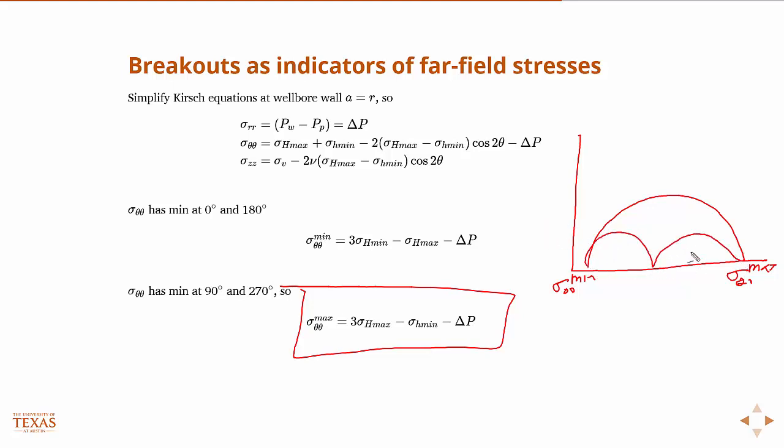So really, this difference is what's going to—if we have an envelope that looks like that—it's the difference in the hoop stress that's going to determine if we fail or not. So our breakouts are going to be mainly dependent upon the difference in the maximum and minimum hoop stress.